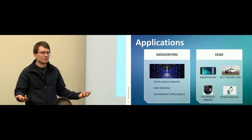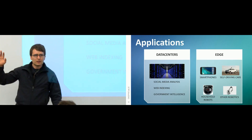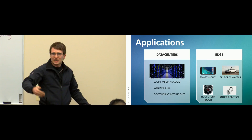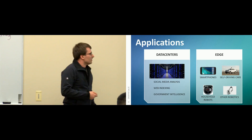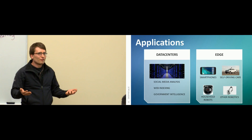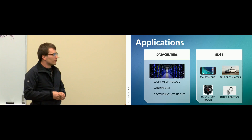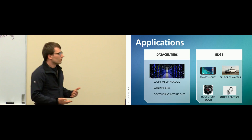The green field area is the edge. Edge computing refers to little devices — from laptops down to microcontrollers in smart fridges. At the edge, things like smartphones, self-driving cars, household robots, and other robots have limited power budgets that are battery-constrained. With the exception of smartphones, they could potentially injure or kill you if they misinterpret the world or their refresh rate is too slow. The stakes are much higher, but the upside is you don't have to talk to the server and wait, which opens up all these new applications.